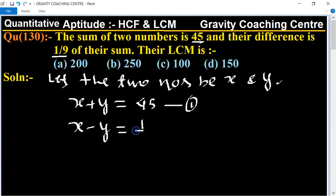x minus y equals 1/9 multiplied by 45, which equals 5.